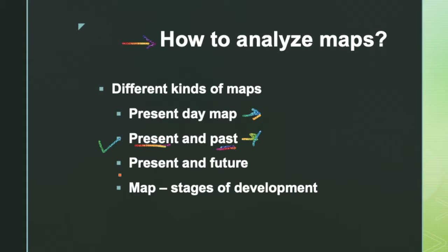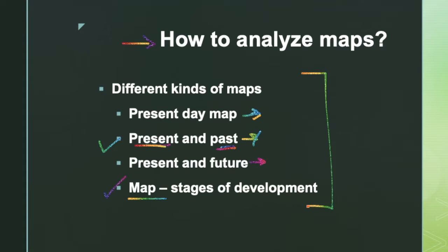Then we have present and future, which is usually about the development of a town or city, using present and future tenses. Almost the same vocabulary can be used for all different types of map-based questions. Then we have a map showing stages of development, where you rely mostly on past tense to describe milestones. Maps mostly deal with changes that happened in a place over a given period of time.